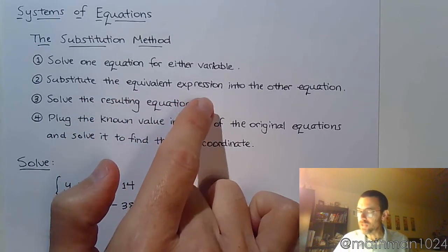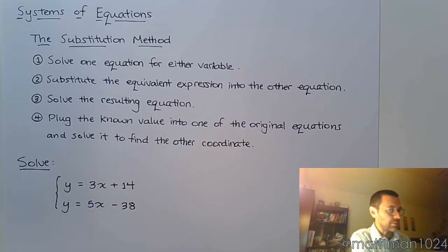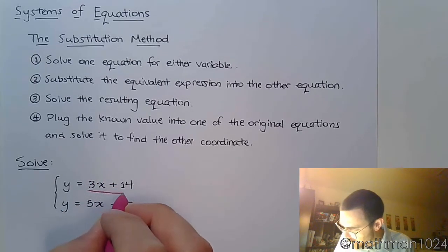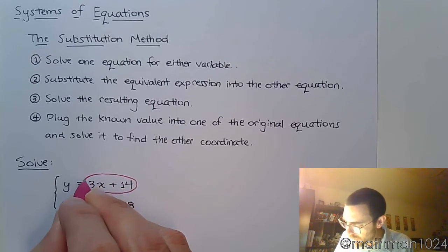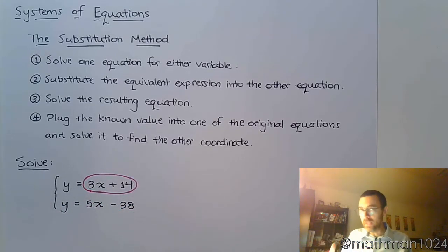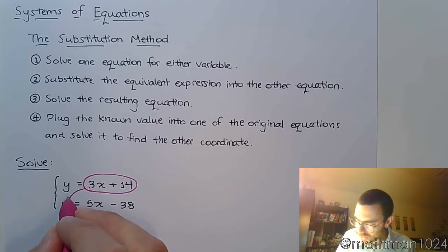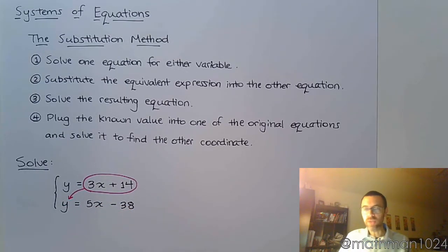Then you're going to substitute the equivalent expression into the other equation. What that means for us is that we're going to take this guy right here, the 3x plus 14, and you see how it says that y equals that. So in this particular system, anytime I see y, I can replace y with 3x plus 14. We can make that substitution because these guys are the exact same. That means down here I see y, and I can easily replace it with that 3x plus 14. That's what step 2 says to do, is to make that substitution.